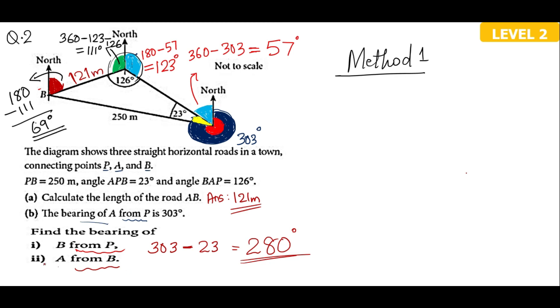So the answer to part 2 here, the bearing of A from B is given as 069 degree.